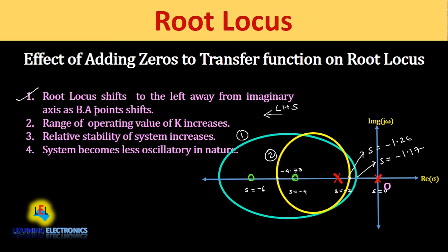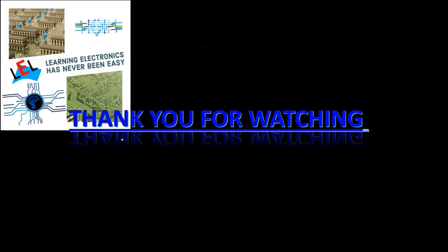There are four effects of adding zeros. First, the root locus shifts left away from the imaginary axis as the breakaway point shifts left. Second, the range of operating values of K increases. Third, the relative stability of the system increases. Fourth, the system becomes less oscillatory in nature. Thank you for watching, and please subscribe for more updates.